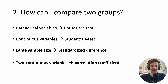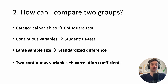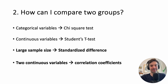If your study has two continuous variables, you'd want to calculate a correlation coefficient. For example, temperature in degrees Celsius and ice cream cones sold — the correlation coefficient would tell you that as temperature goes up, ice cream sales also go up.